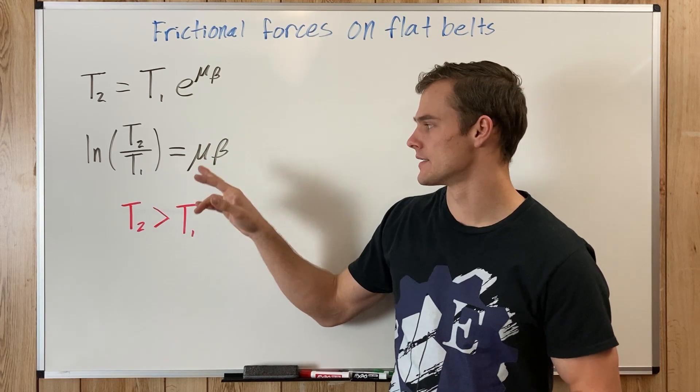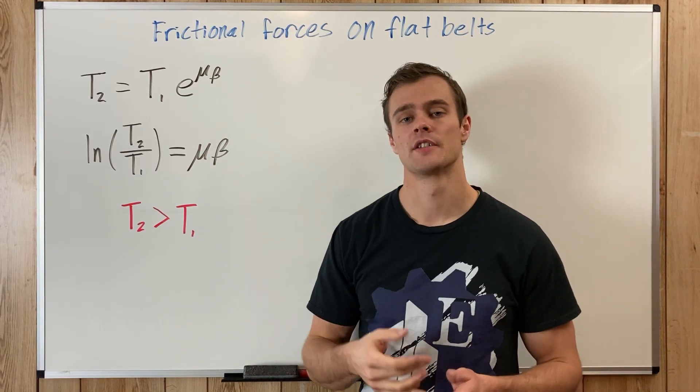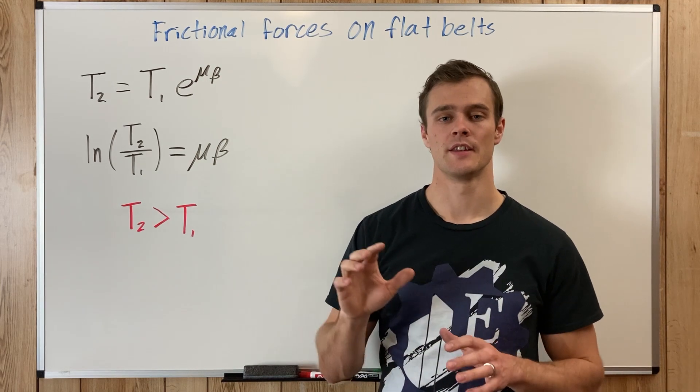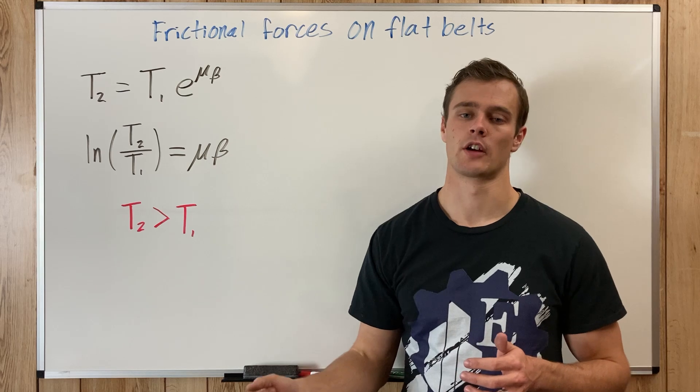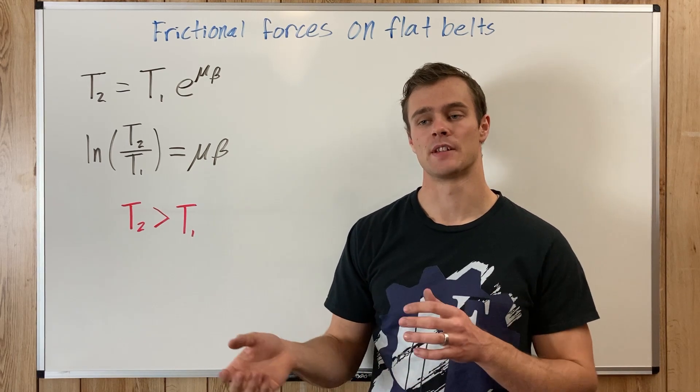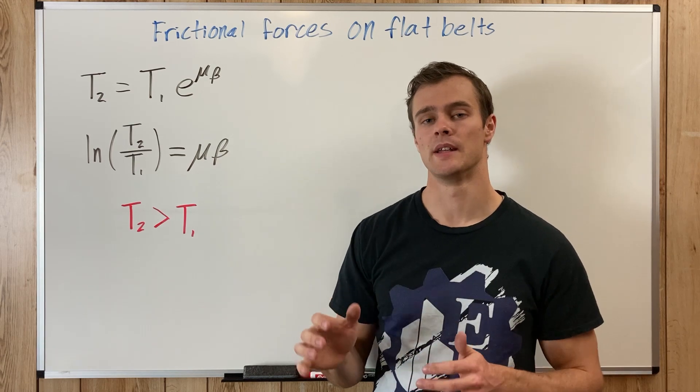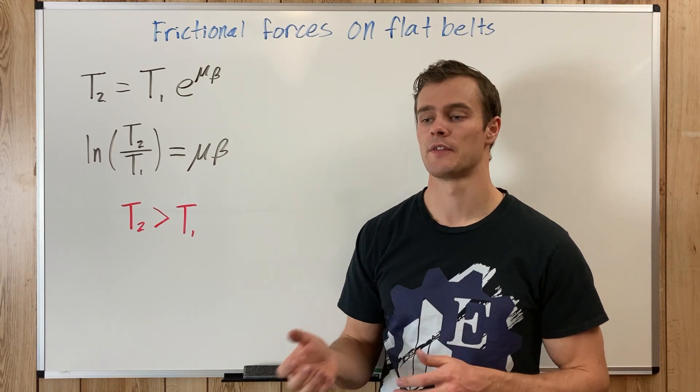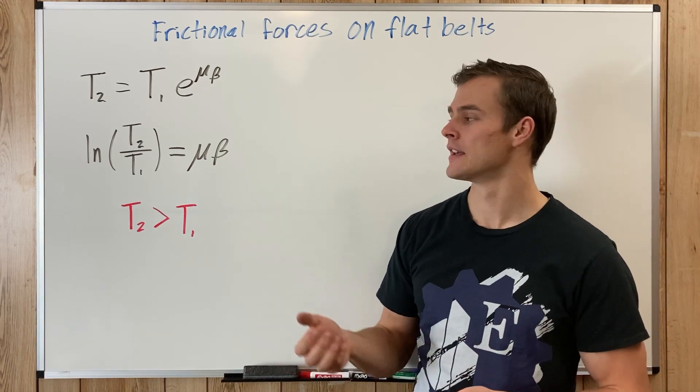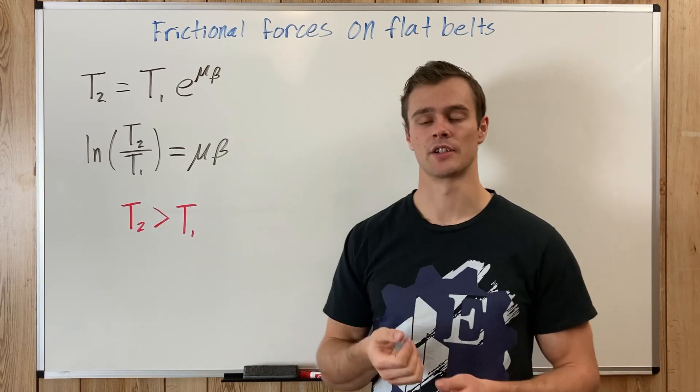The next variable, mu, is the coefficient of static friction or kinetic friction, depending on whether the rope or belt is moving across the circular object. If it's moving across it, then it's kinetic friction. If it's just pulling on the object, making it rotate, like a pulley would, then it's static friction.